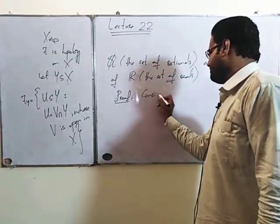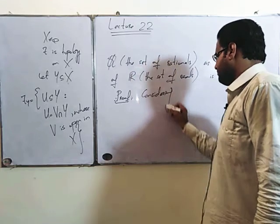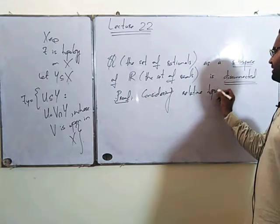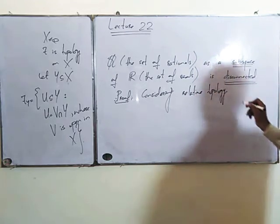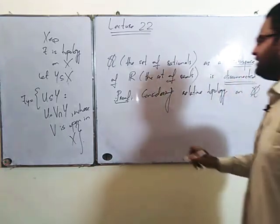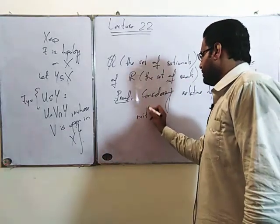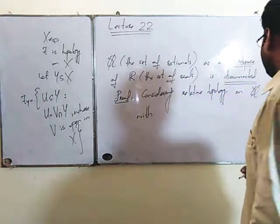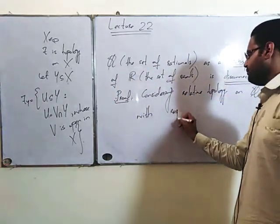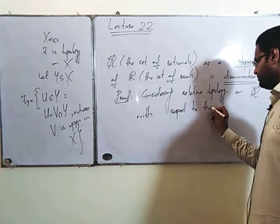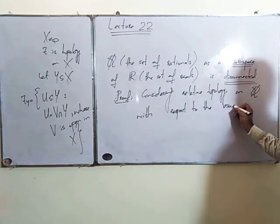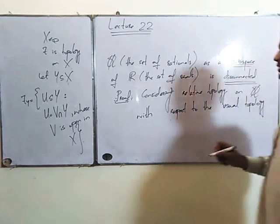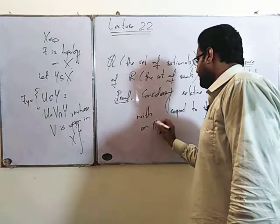Consider the relative topology on Q with respect to the usual topology on R. We want to show this topological space is disconnected.